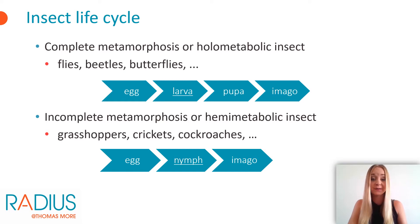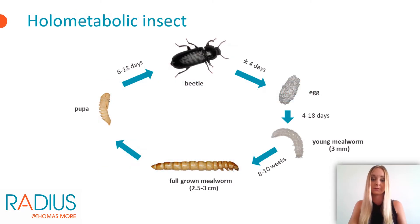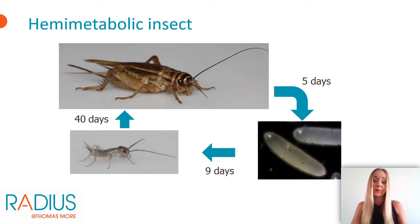Other insects, such as mealworms and butterflies, undergo a complete metamorphosis during their development. This means that they undergo a pupa phase before they reach the fertile adult stage. Here the life cycle of mealworms is presented as an example of a holometabolic insect — an insect that undergoes a complete metamorphosis with a pupa phase before reaching the adult stage. And here we have the life cycle of crickets as an example of a hemimetabolic insect, where the nymphs hatch from the eggs and already look a bit like the adult crickets.